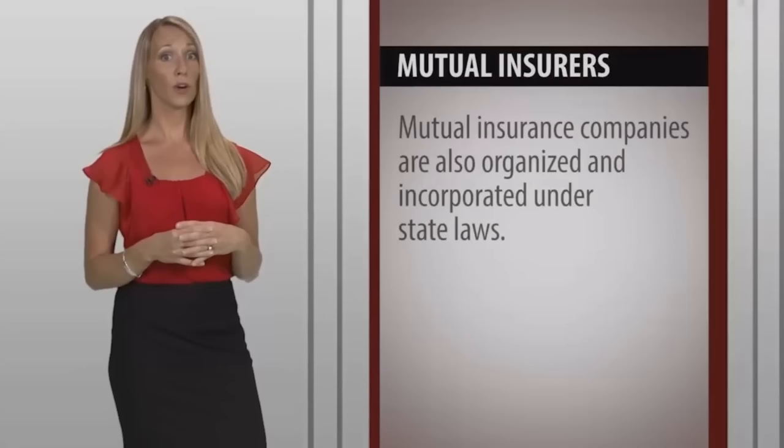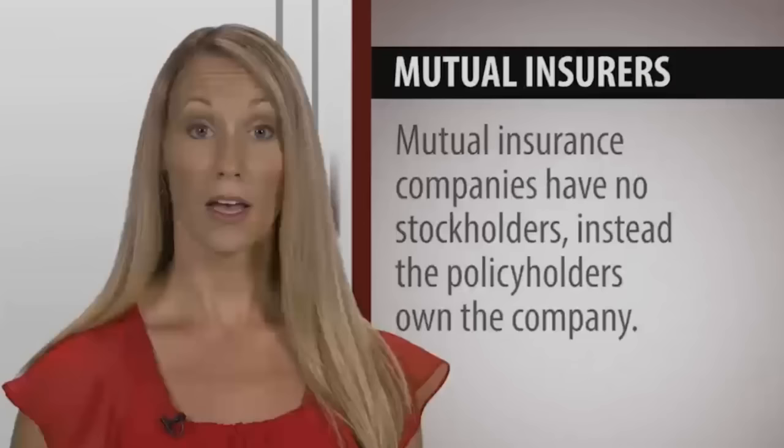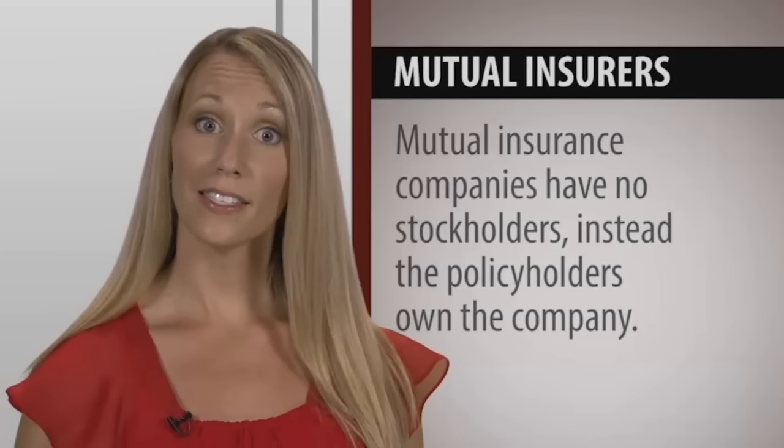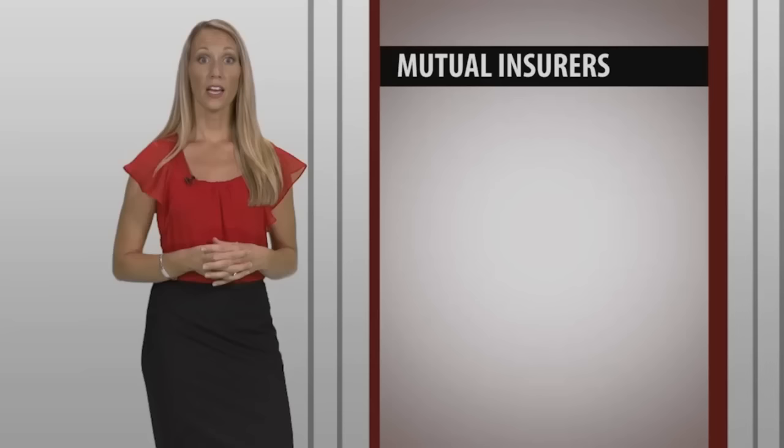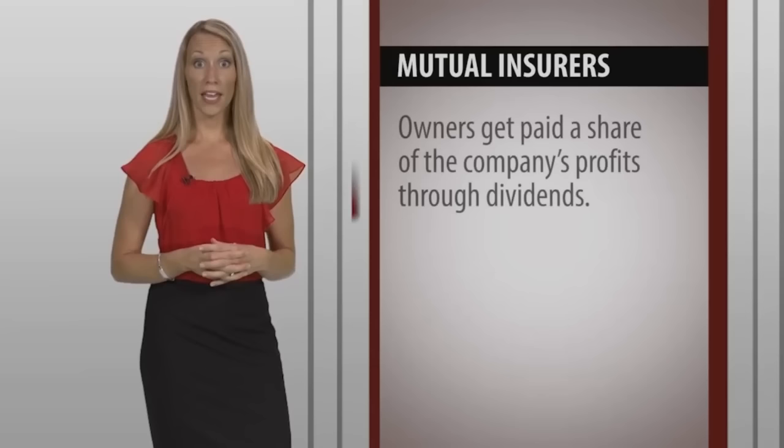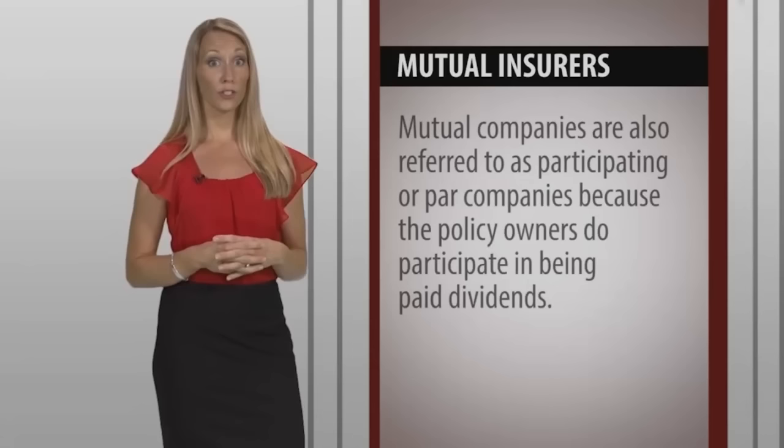Mutual insurers: Mutual insurance companies are also organized and incorporated under state laws, but they have no stockholders. Instead, the policyholders own the company. And as owners, they get paid a share of the company's profits through dividends. Mutual companies are also referred to as participating or par companies because the policy owners do participate in being paid dividends.